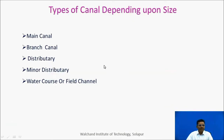Canals can be classified depending upon their size as: main canal, branch canal, distributory, minor distributory, and water course or field channel.